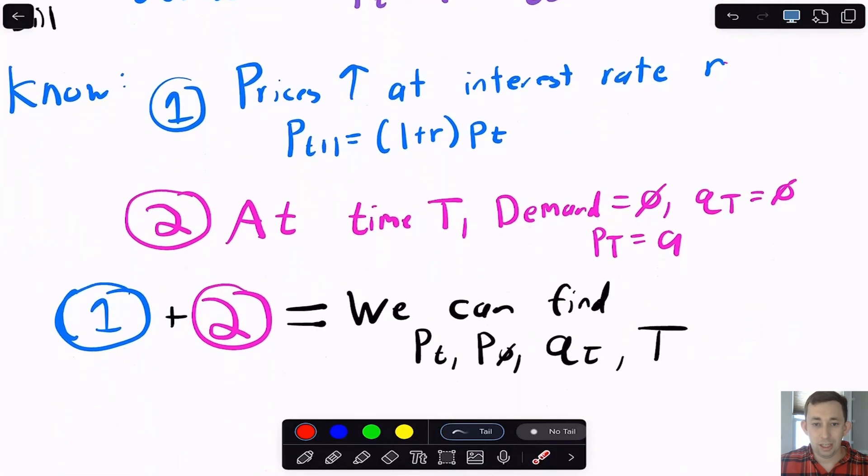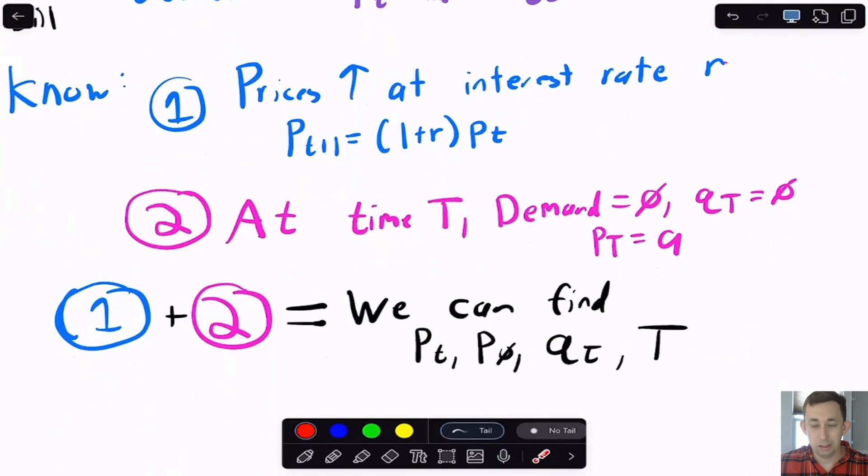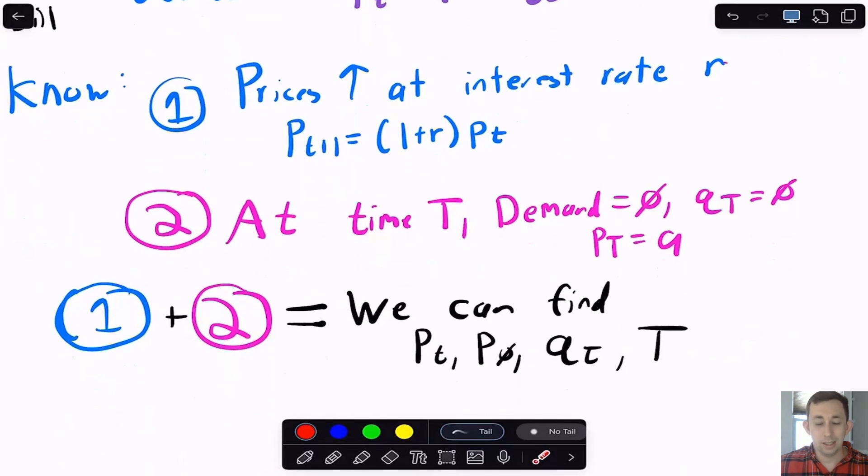We know from what we just talked about, the prices are going to go up at the interest rate, because we're in a perfect competition setting. So we know that PT plus one is one plus the real interest rate R times PT. We know that at the end of the period in year T, demand is zero, quantity is zero, and so the price must be equal to A. And so using just these two facts, as well as our demand curve, we're going to be able to trace out the last period T, and also our prices and quantities in each period.